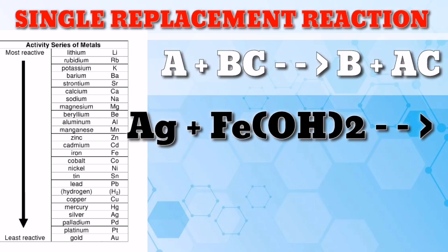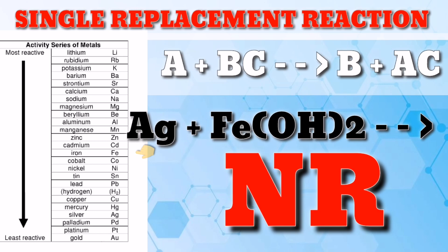Next example, we have silver and ferrous hydroxide. What are the products? The answer is no reaction, because iron is more reactive than silver, based on the activity series.